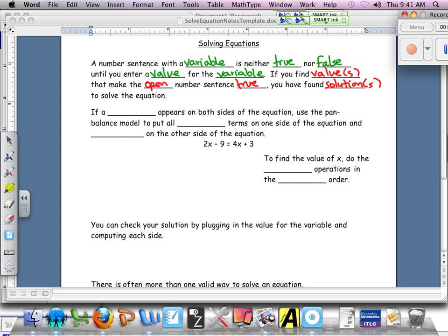Now if we have a slightly more complicated equation like we just saw on that virtual manipulative site where a variable appears on both sides of the equation, we're going to use that pan balance model to put all variable terms on one side of the equation and constants, the number part without the variable, on the other side of the equation.